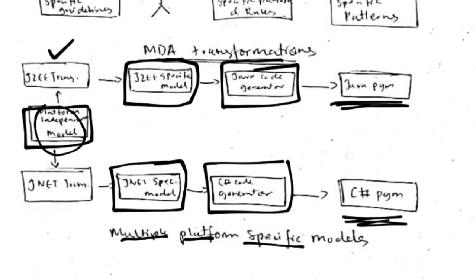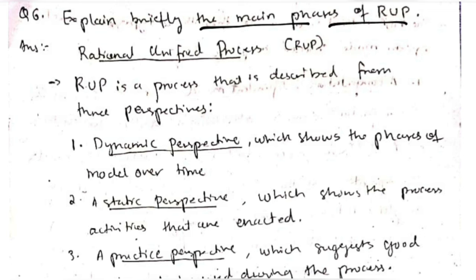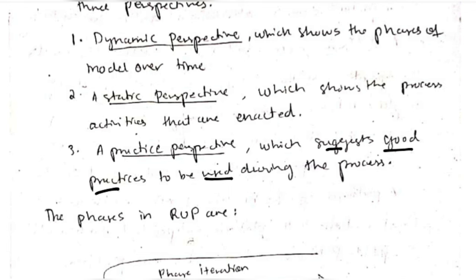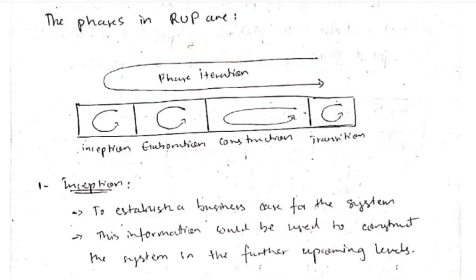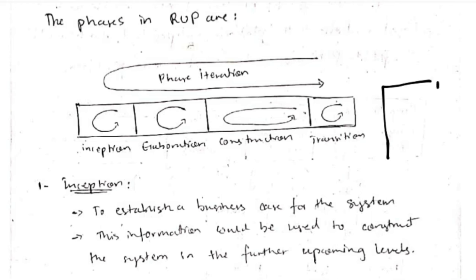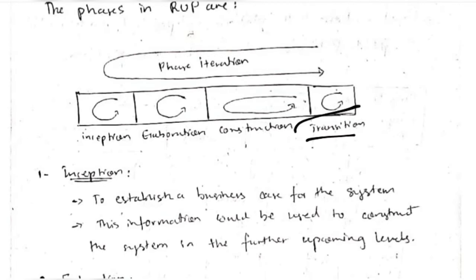The Rational Unified Process (RUP) has three perspectives: dynamic — showing phases of the model over time; static — showing process activities being enacted; and practice — suggesting good practices to be used. The four phases are: inception — making a mind map of your idea; elaboration — elaborating that idea; construction — using technical skills and existing code/technologies to develop the product; and transition — handling product evolution if required, then repeating the process to improve further.